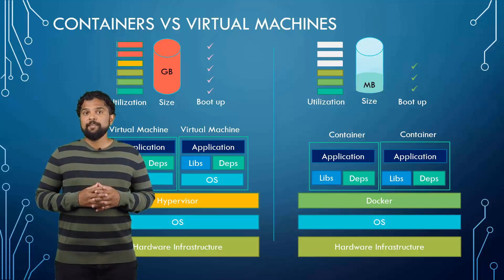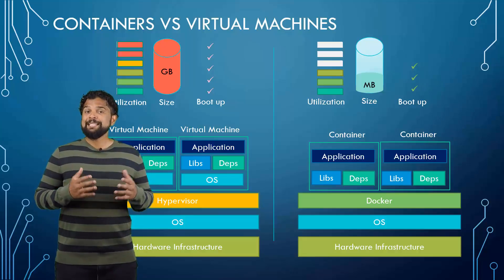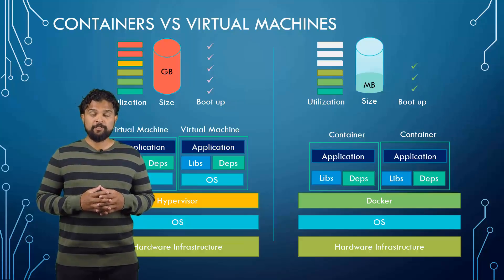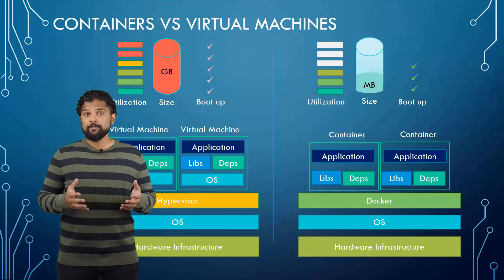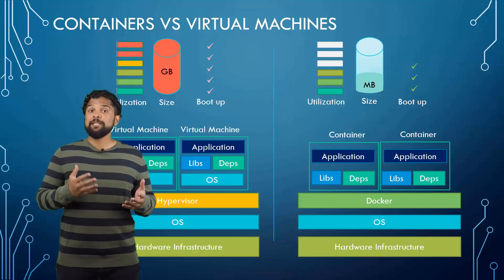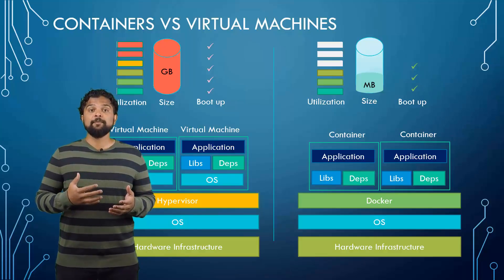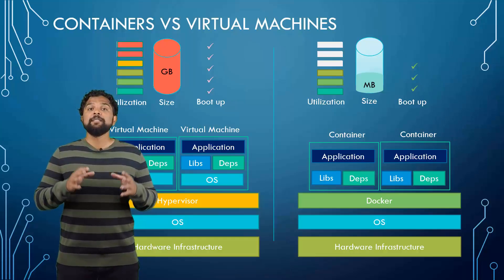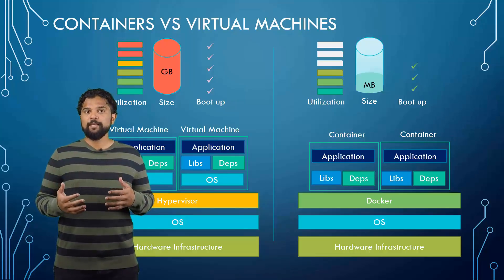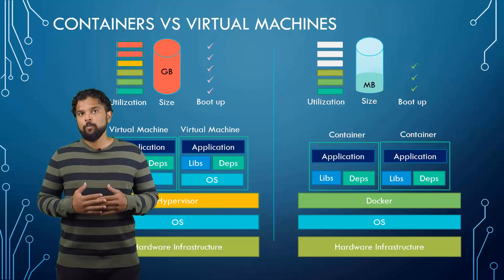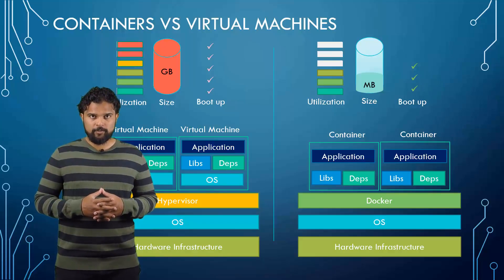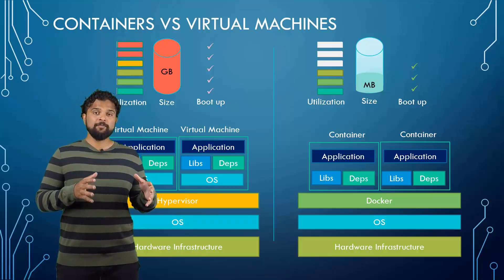It is also important to note that Docker has less isolation as more resources are shared between containers, like the kernel, whereas VMs have complete isolation from each other. Since VMs don't rely on the underlying operating system or kernel, you can have different types of operating systems such as Linux-based or Windows-based on the same hypervisor, whereas that is not possible on a single Docker host. So these are some of the key differences between the two.